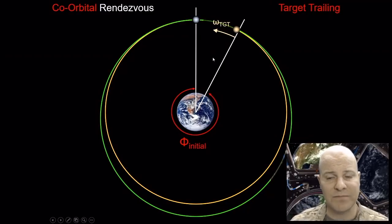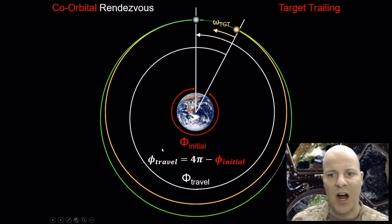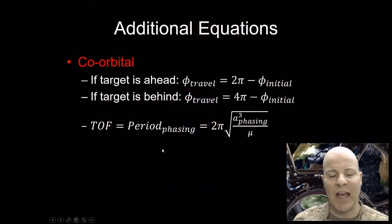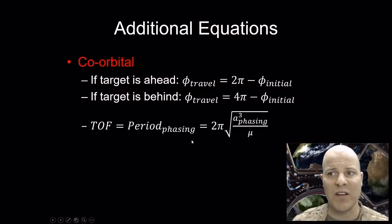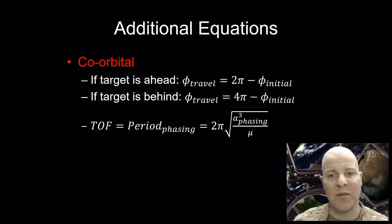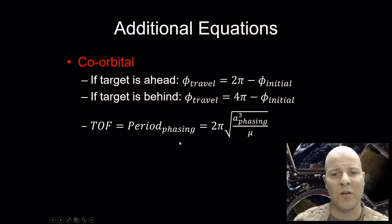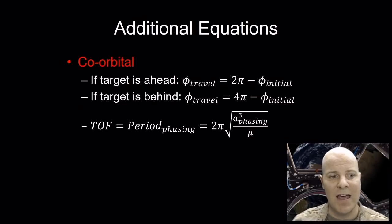For the target-trailing case, we calculate omega target, we're given phi initial (interceptor to target in the direction of motion), and phi travel equals 4π minus phi initial instead of 2π minus phi initial. We calculate the phasing orbit the same way. In summary: if target is ahead, phi_travel = 2π − φ_i; if target is behind, phi_travel = 4π − φ_i. The time of flight in both cases is one full period of the phasing orbit: T = 2π √(a_phasing³ / μ).